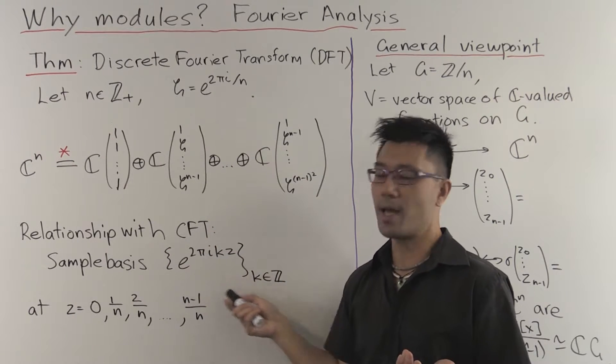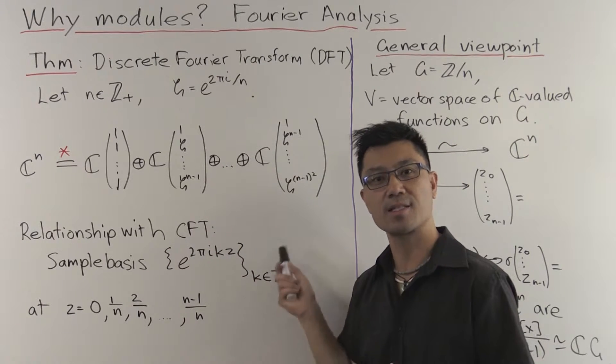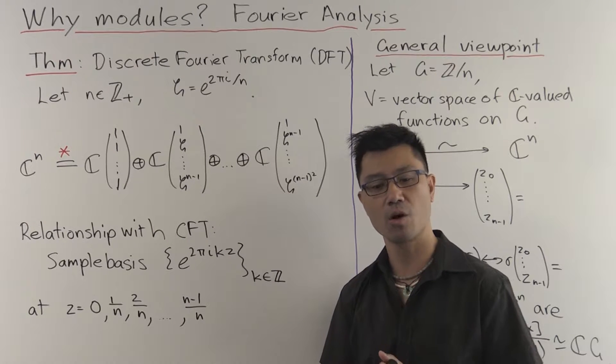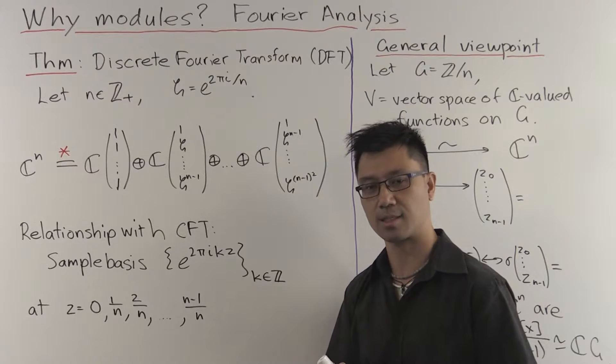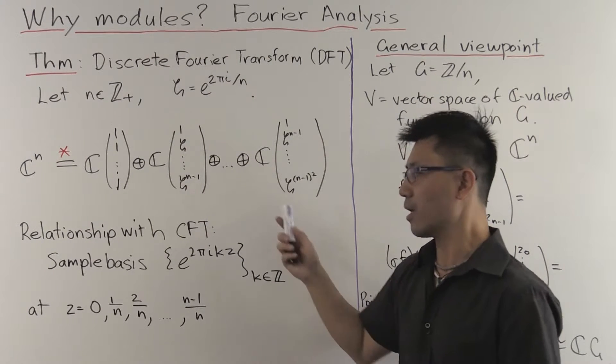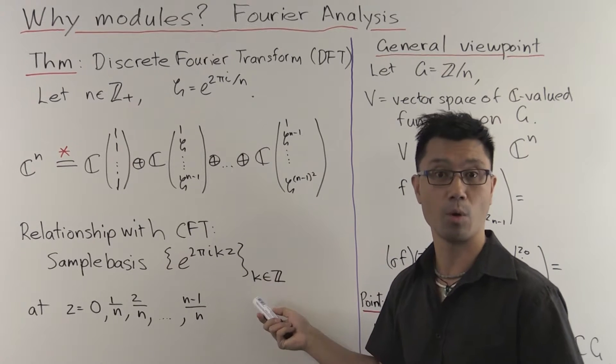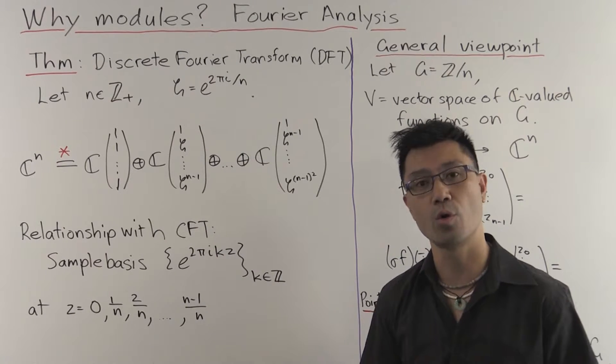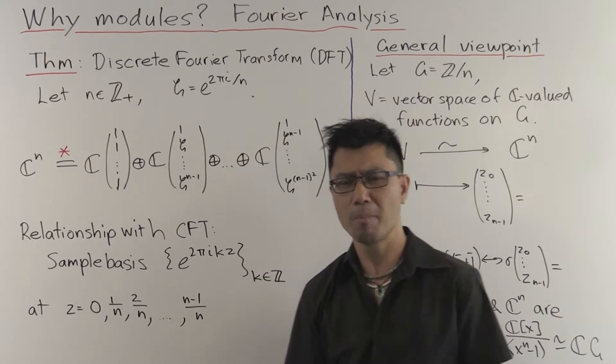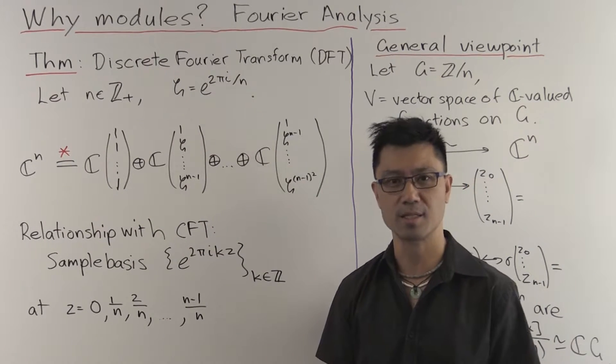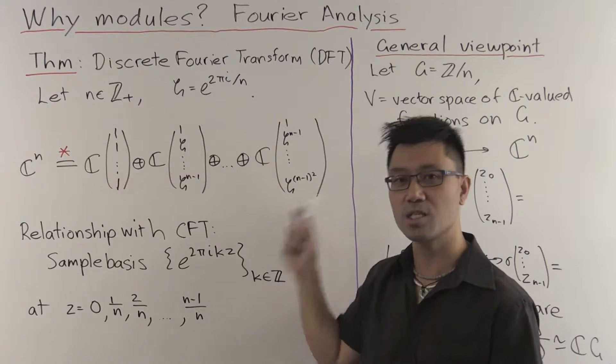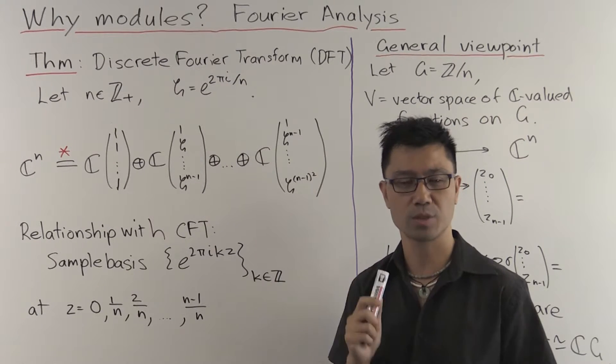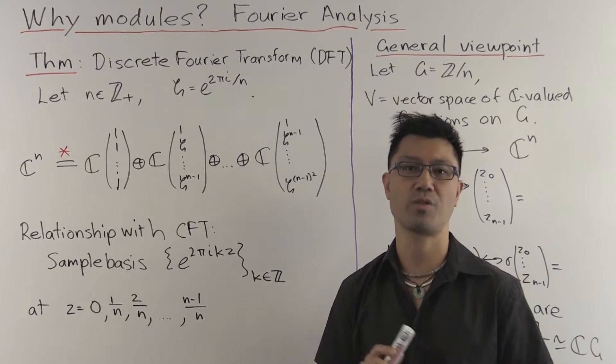Now, why is Fourier analysis a good thing? Well, you learn in your analysis classes that these functions form an orthonormal basis. And similarly, these vectors also form an orthonormal basis for C^n. But there are lots and lots of orthonormal bases for C^n. So why is this one a good one? And that's what I want to tell you today, and that's where the module theory comes in.